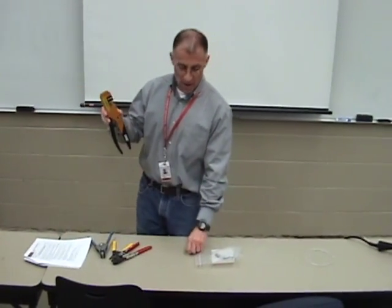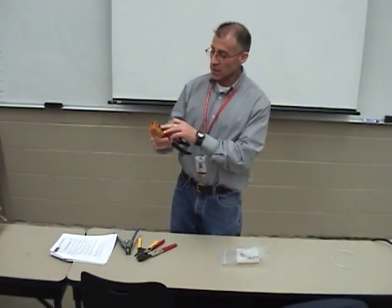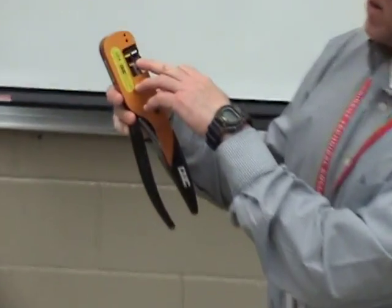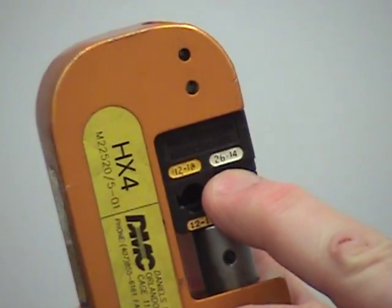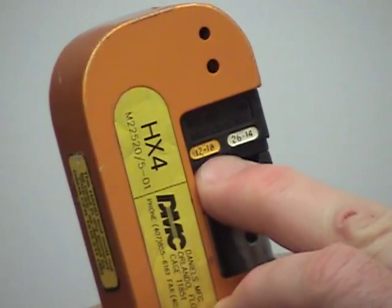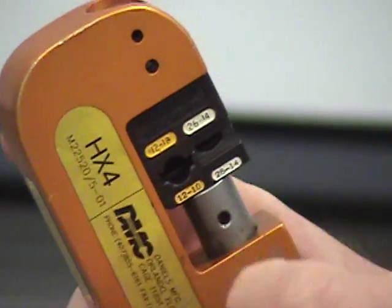When I use this crimp, I'm going to work with 18 gauge wire. Since I'm working with 18 gauge wire, I look at my head here, and my head shows me 26 to 14. It also shows me 12 to 18. I'm using the 26 to 14 because it gave me a nicer crimp.